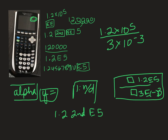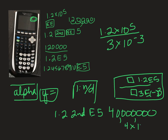You're going to get a big number — it doesn't seem like you should, but you will. Let me redo it: 1.2, second, E, 5 divided by 3, second, E, negative 3. You get 4 followed by 1, 2, 3, 4, 5, 6, 7 zeros. Your calculator is not going to put this in scientific notation, so you're going to have to recognize how many places we move the decimal point: 1, 2, 3, 4, 5, 6, 7. So 40,000,000 is the same thing as 4 times 10 to the 7.